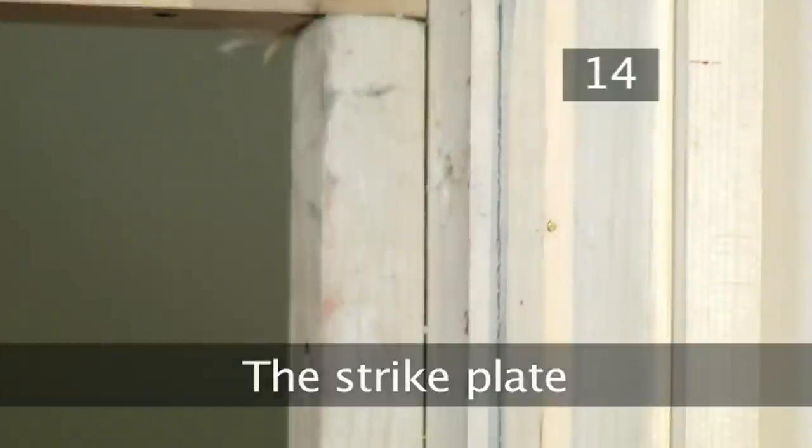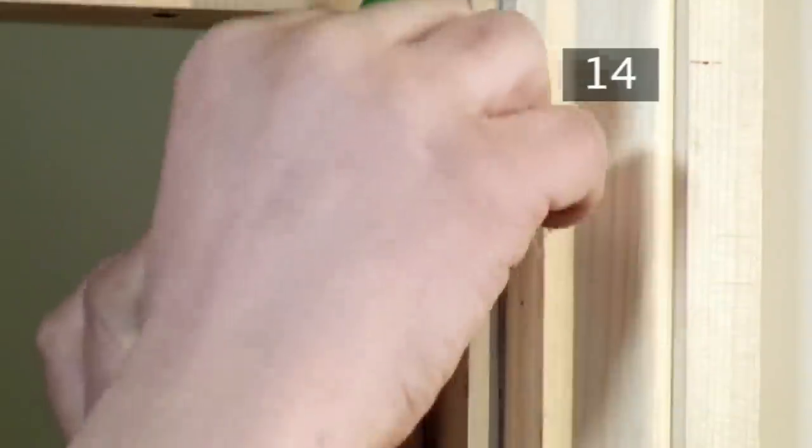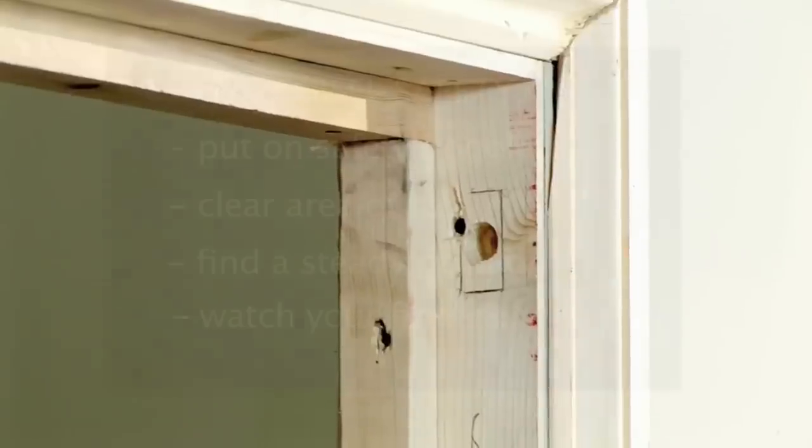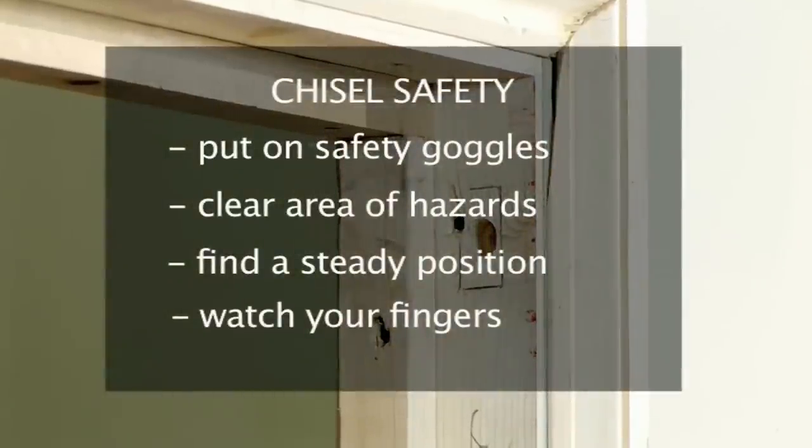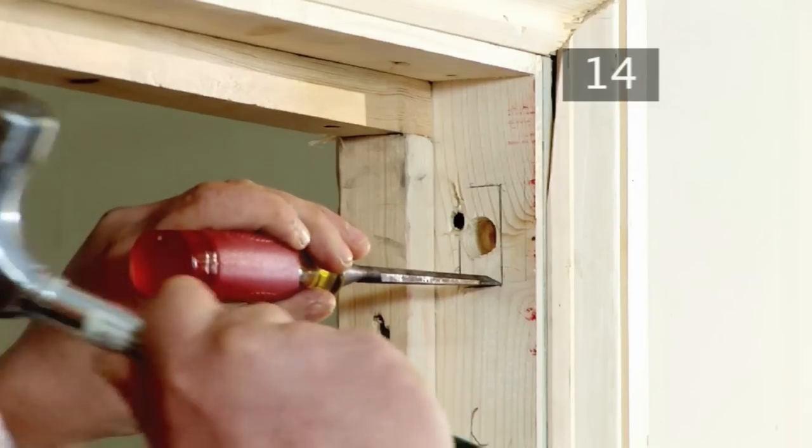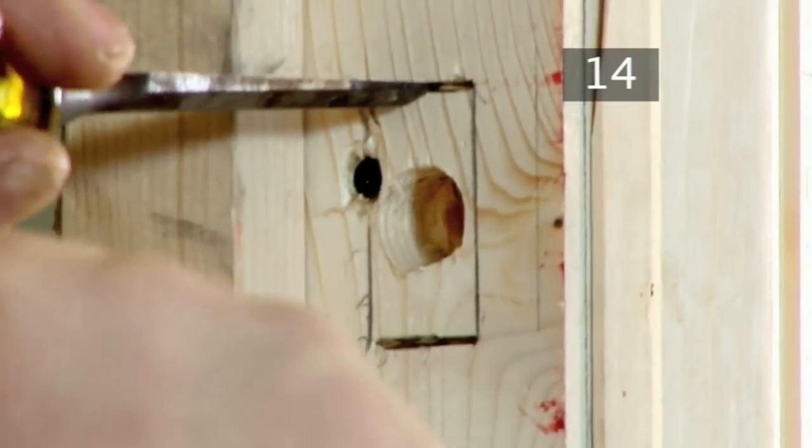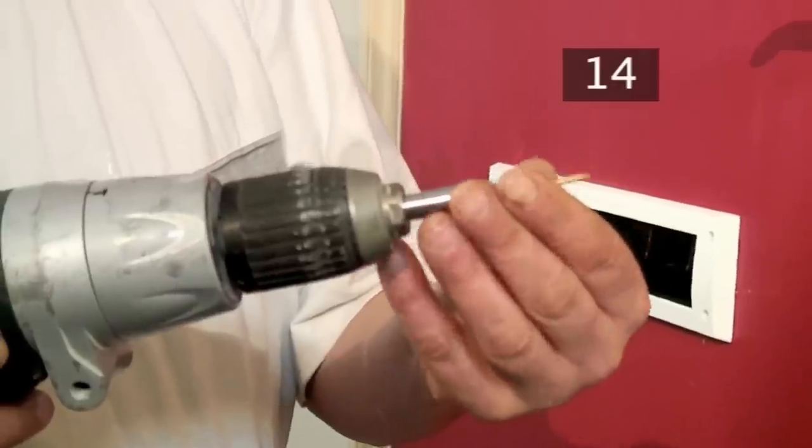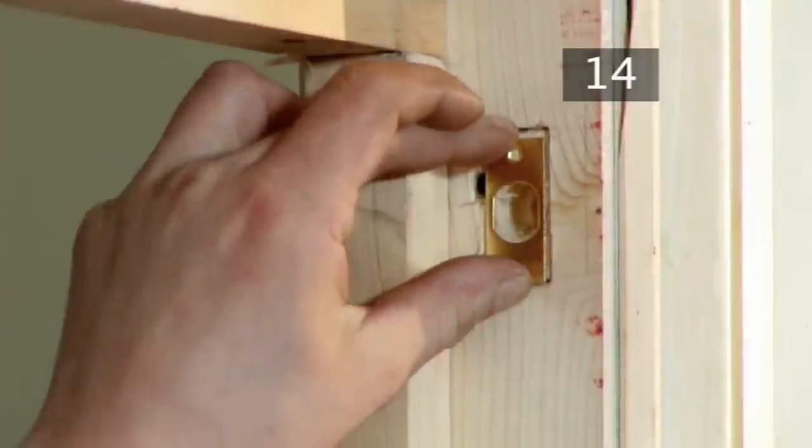Step 14. The strike plate. Hold the strike plate over the hole and draw around it with your pencil. Remember your chisel safety. As before, make a series of cuts along your pencil outline. Then chisel out a shallow recess for the strike plate. The strike plate should lie flush with the door frame. Attach a screw head bit to the drill and drill the strike plate into position.